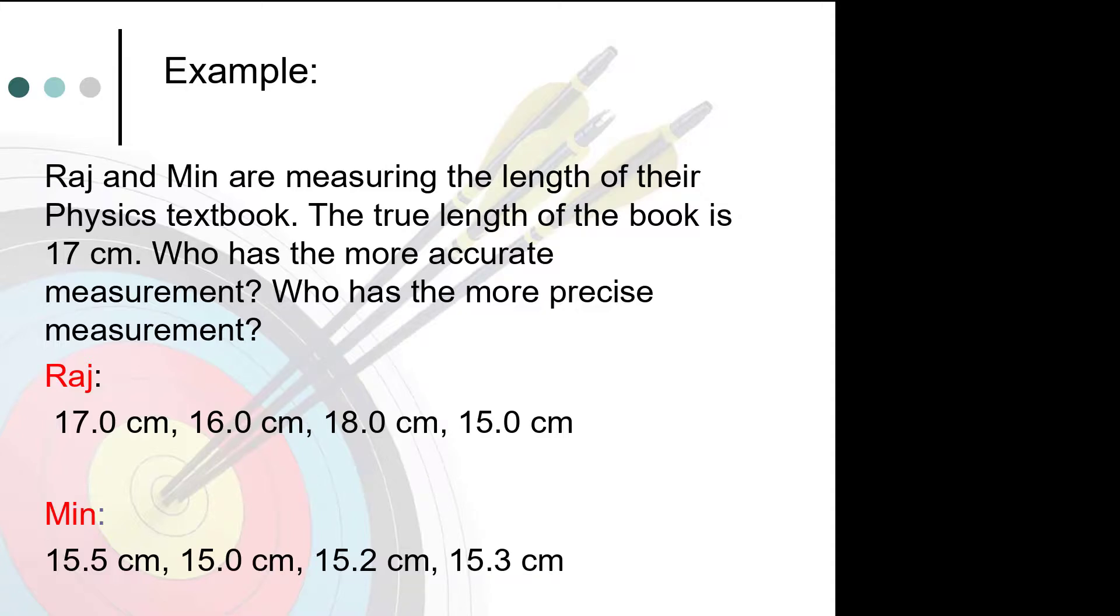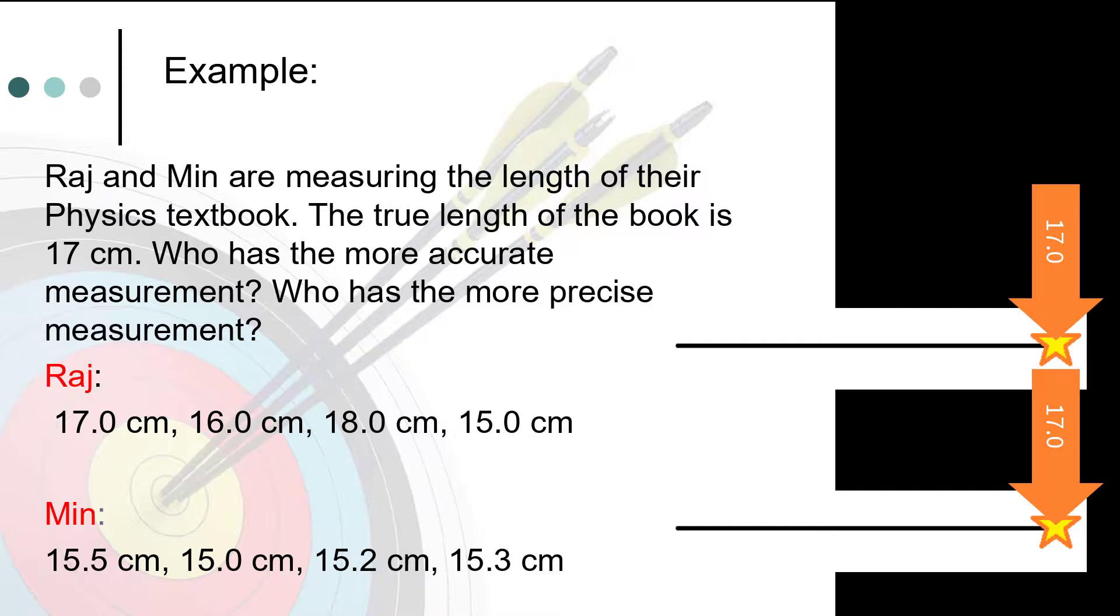Let's try a practice problem. Raj and Min are measuring the length of their physics textbook. The true length, that means the target value, of the book is 17 centimeters. Who has the more accurate measurement? Who has the more precise measurement?